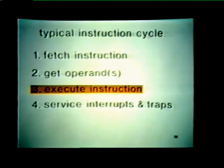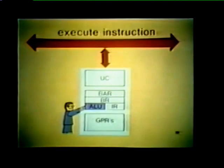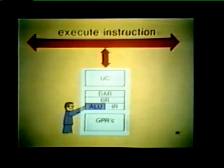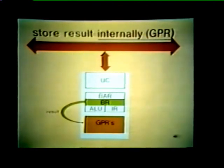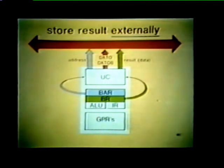Once the operands have been retrieved and stored in the processor, the current instruction can be executed. The ALU executes the instruction — it may perform an arithmetic operation such as adding two operands, or a logical operation such as complementing the operands. Regardless of the operation performed by the ALU, the result must be stored. The result can be stored internally in one of the processor's general purpose registers, or it can be stored externally in some bus device such as memory or an IO register.